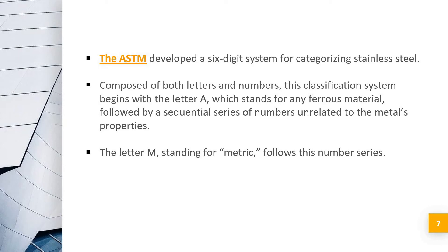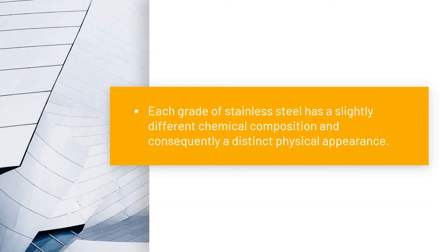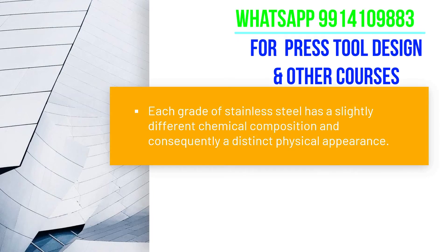The ASTM classification system is composed of both letters and numbers. It begins with the letter 'A', which stands for any ferrous metal, followed by a series of numbers unrelated to the metal property. The letter 'M' stands for metric and follows with the number series. Since each grade of stainless steel has a slightly different chemical composition, it consequently has a distinct physical appearance.